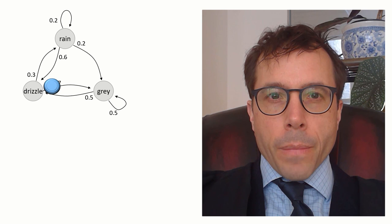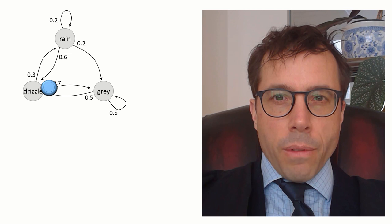For example, if today was drizzle, then tomorrow is either grey with probability 0.7 or rain with probability 0.3.